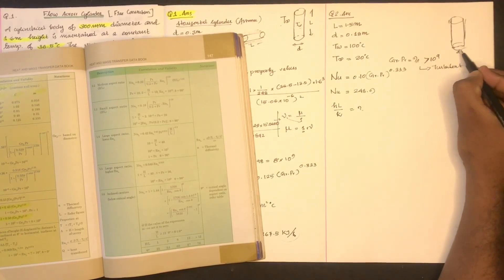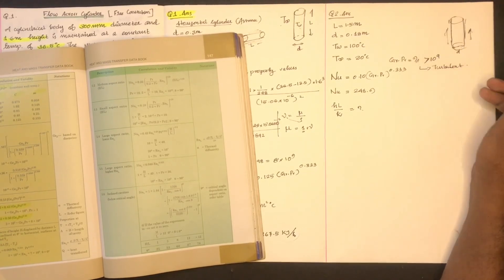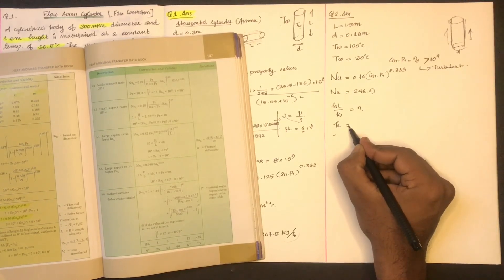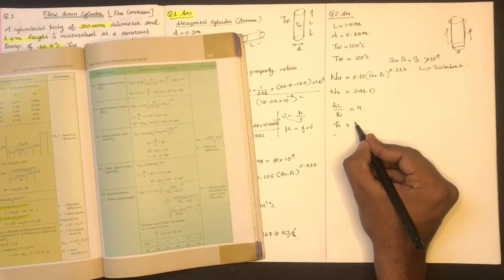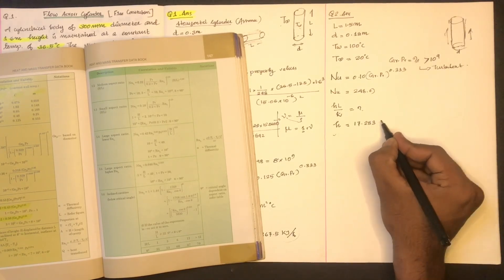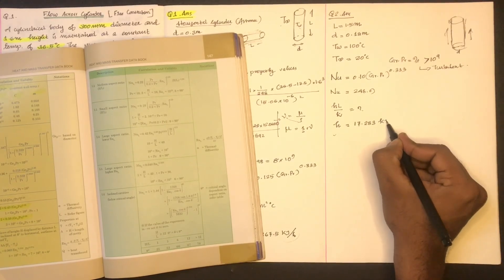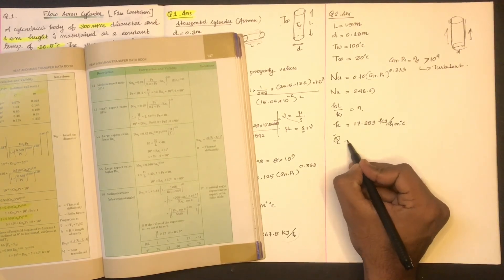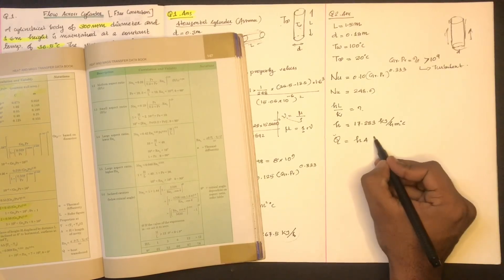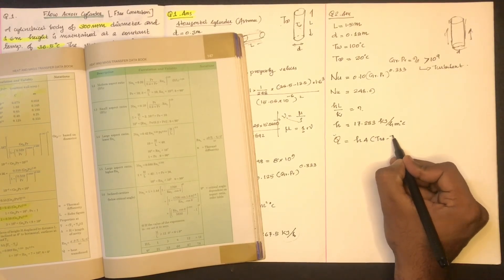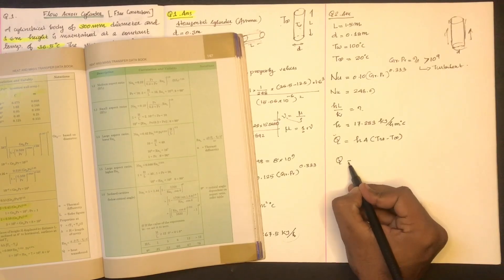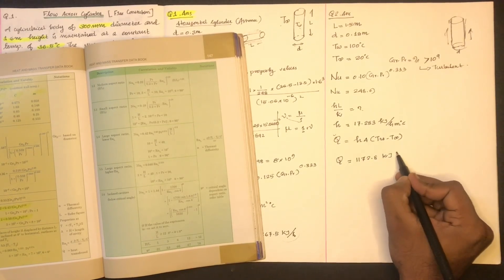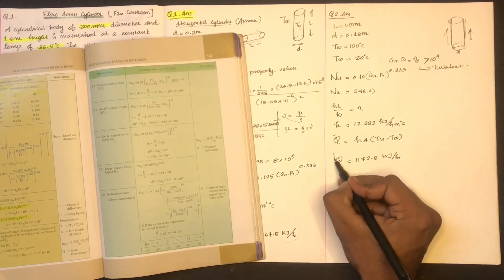We are dealing with external flow. From this we get H. The value of H is 17.283 kilojoules per hour per meter per degree Celsius. From this we find Q using the equation Q equals H times A times temperature difference. Q is equal to 1172.8 kilojoules per hour.